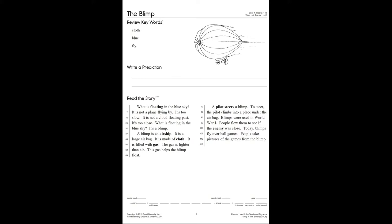Now, the story. What is floating in the blue sky? It is not a plane flying by. It's too slow. It is not a cloud floating past. It's too close. What is floating in the blue sky? It's a blimp. A blimp is an airship. It is a large airbag. It is made of cloth. It is filled with gas. The gas is lighter than air. This gas helps the blimp float.